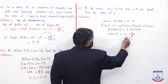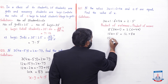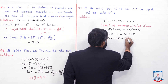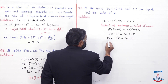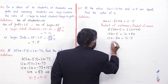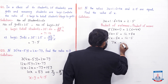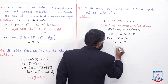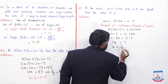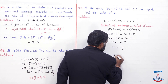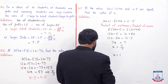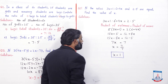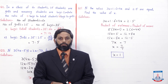8x کو left side پر لیں: 15x - 8x = 12 - 5 → 7x = 7۔ 7 سے divide: x = 1۔ تو x کی value ہمارے پاس آگئی: x = 1۔ تو یہ ہمیں یہاں find کرنی تھی اور ہم نے find کر لی۔